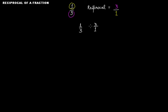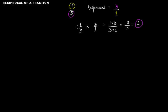One more important thing: if you multiply the fraction and the reciprocal of that fraction, you can clearly see that this is 1 times 3 and 3 times 1, giving us 3 over 3, which equals 1. So remember: a fraction multiplied by its reciprocal always gives 1.